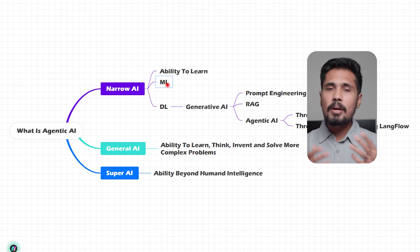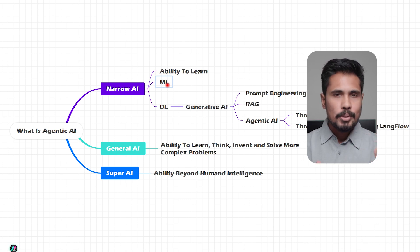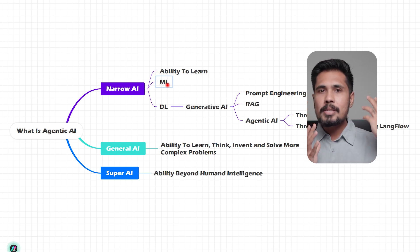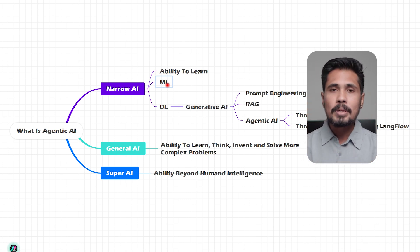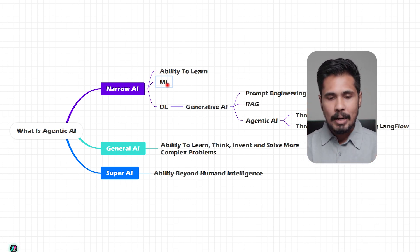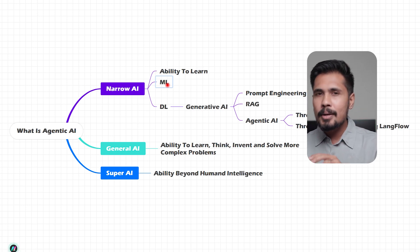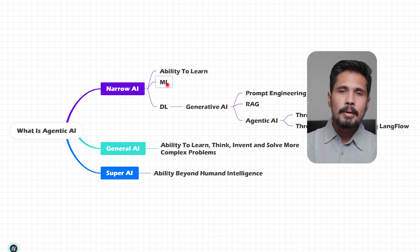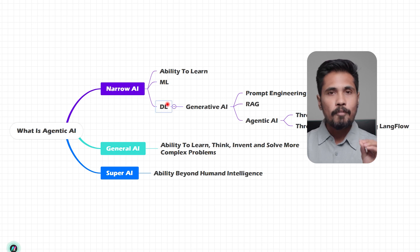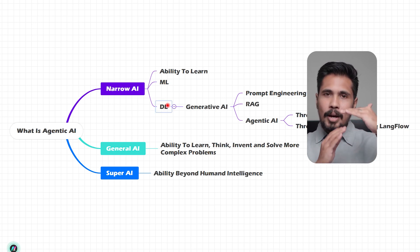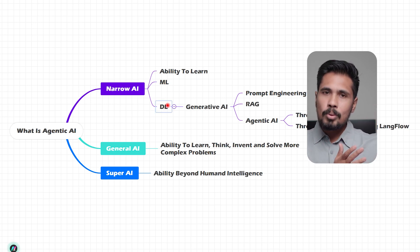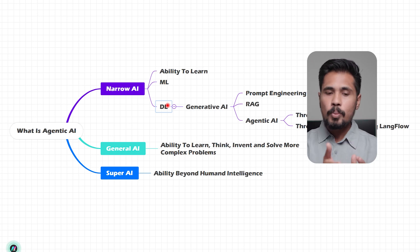If I want to build intelligence related to images — I want to analyze a face or determine whether a person is happy or sad — for image-related, video-related, or audio-related tasks, I need to use deep learning. Within deep learning, you have two types: discriminative AI and generative AI.